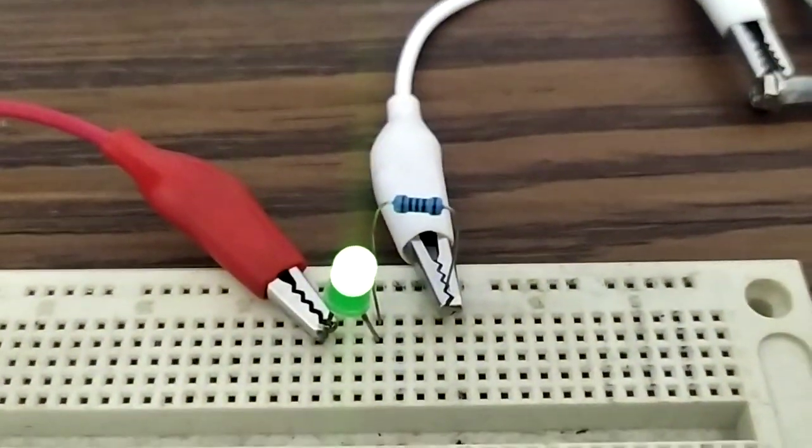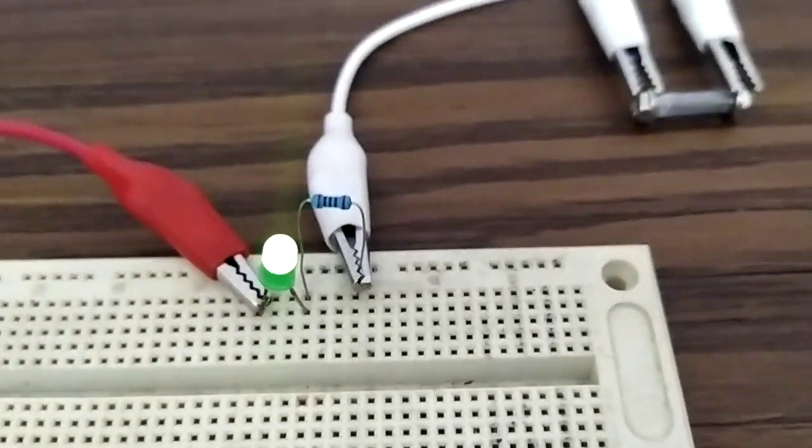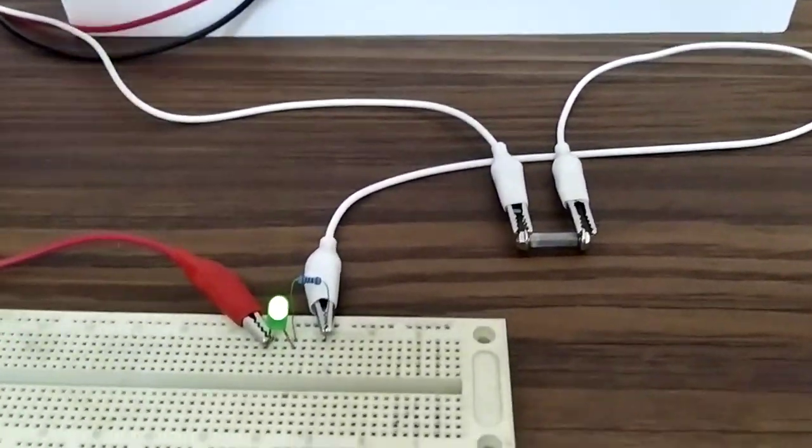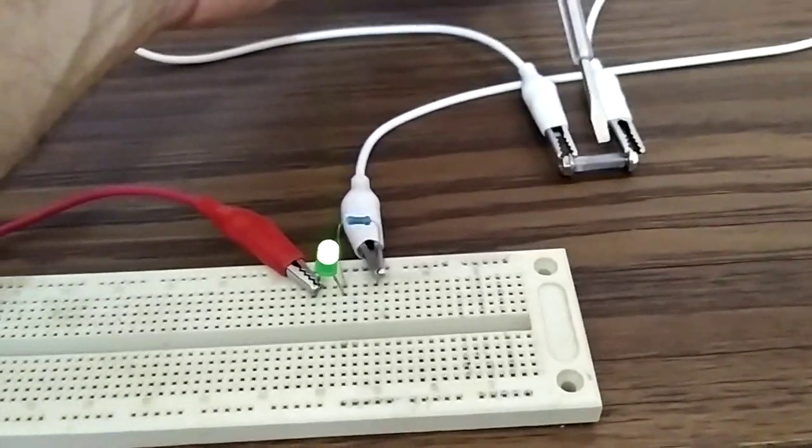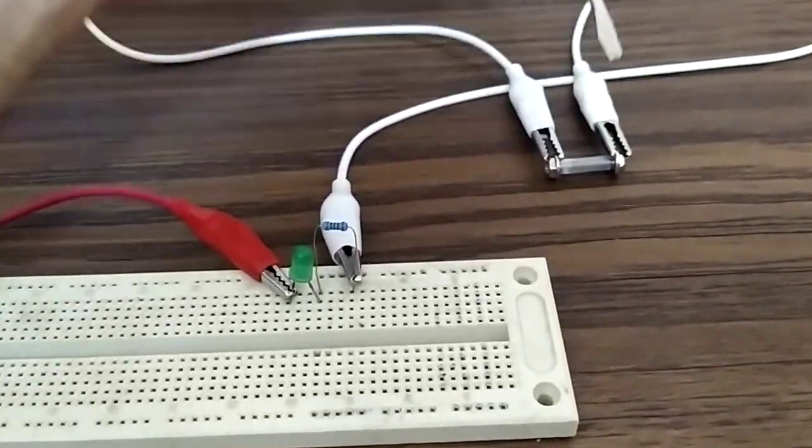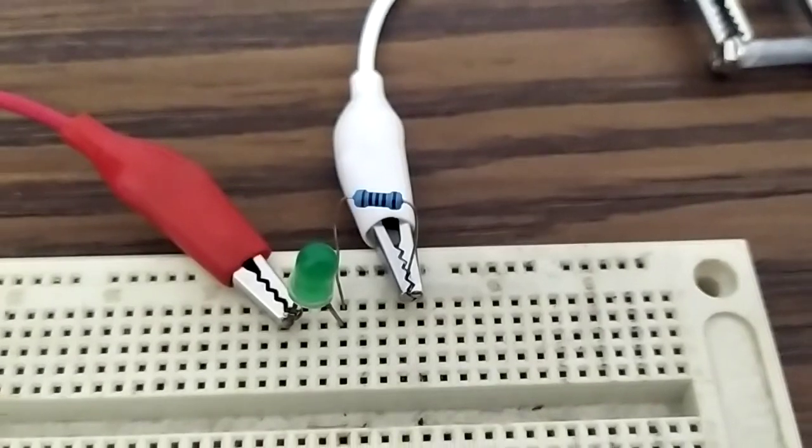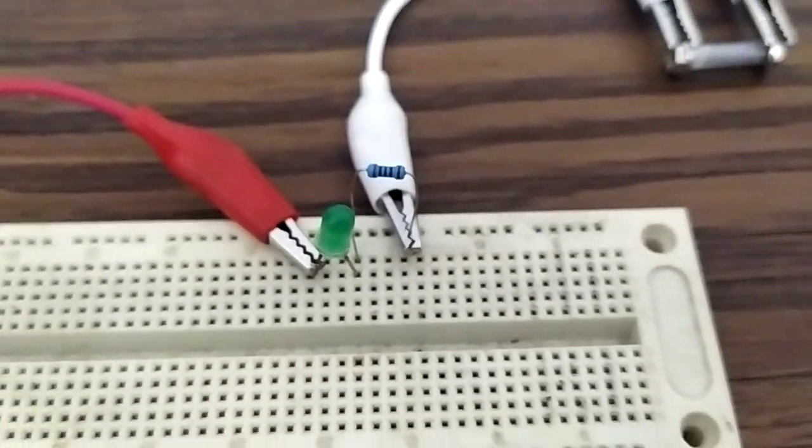And now our LED is powered. Once we make a mechanical contact to the coherer, any kind of mechanical disturbance like this, our LED will be disabled.